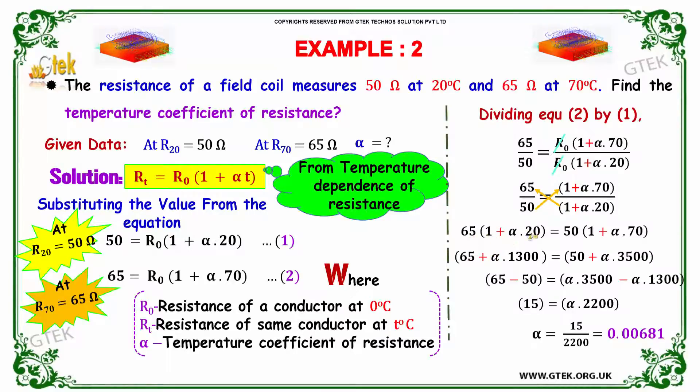Plus 65 into 20, 1300 alpha, equal to 50 plus 70 into 50, 3500 alpha.